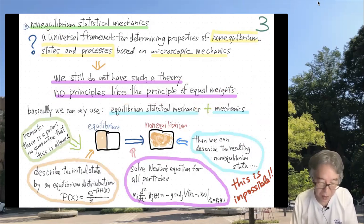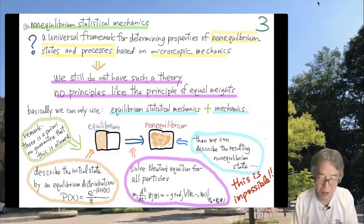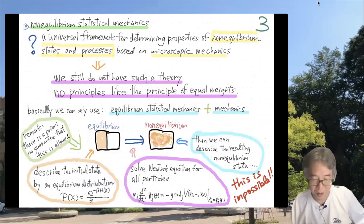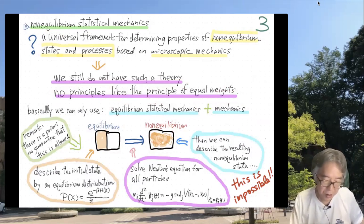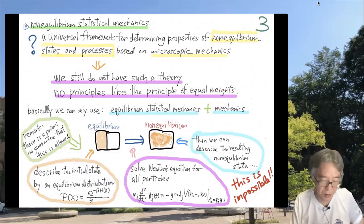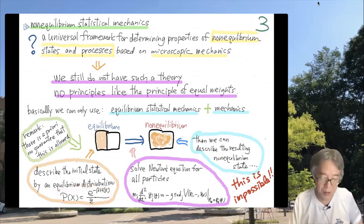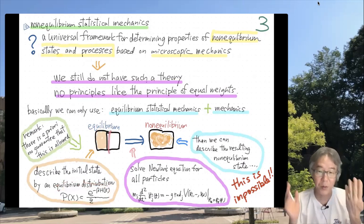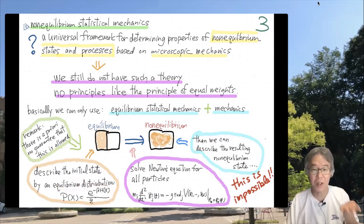What you can do is rely on equilibrium statistical mechanics and mechanics. Suppose you have an equilibrium state and you remove a wall, triggering a very wild non-equilibrium process. The initial state is described by equilibrium statistical mechanics, so you assume the initial state is given by a canonical distribution — a probabilistic description. Then you remove the wall, entering a very non-equilibrium situation.